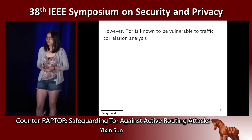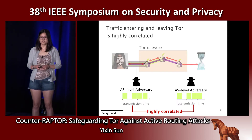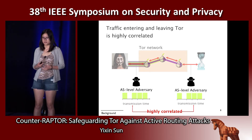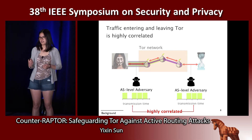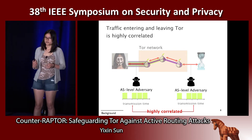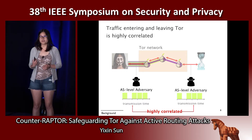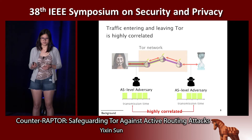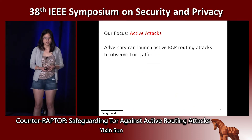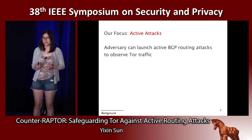However, Tor is known to be vulnerable to traffic correlation analysis. The traffic entering and leaving Tor is highly correlated. An AS-level adversary who is on path at both ends of the communication — between the client guard and between the exit and the server — can perform statistical correlation analysis on the packet traces at both ends and de-anonymize the users. Our focus is on active attacks on Tor, where an adversary can launch active BGP routing attacks to get on path and observe the Tor traffic.